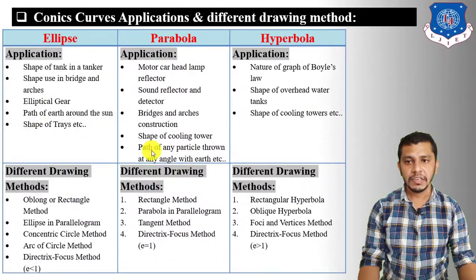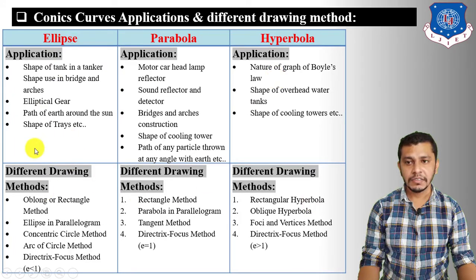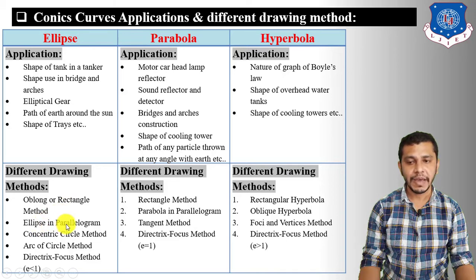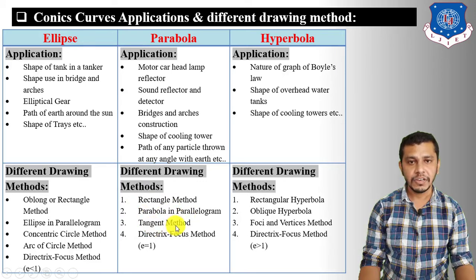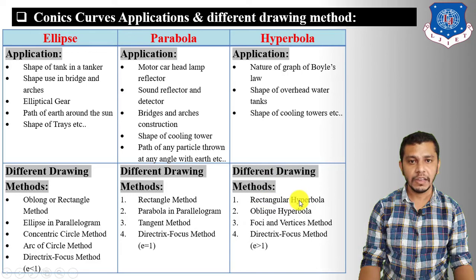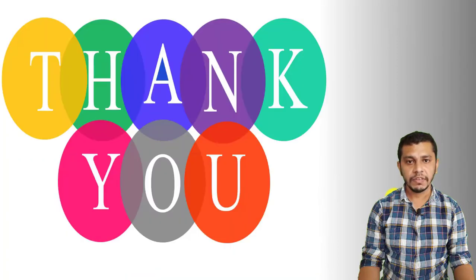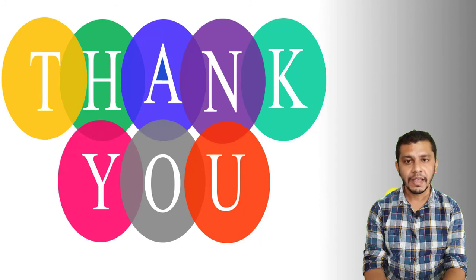Let us summarize the applications and drawing methods of ellipse, parabola, and hyperbola. There are five methods to draw an ellipse: oblong or rectangle method, ellipse in parallelogram, concentric circle method, arc of circle method, and directrix-focus method. Methods to draw a parabola include rectangle method, parallelogram method, tangent method, and directrix-focus method. Methods to draw a hyperbola include rectangular hyperbola, oblique hyperbola, hyperbola with foci and vertices, and hyperbola with directrix and focus method. Thank you for watching. In our next lecture we will cover methods of drawing ellipse.